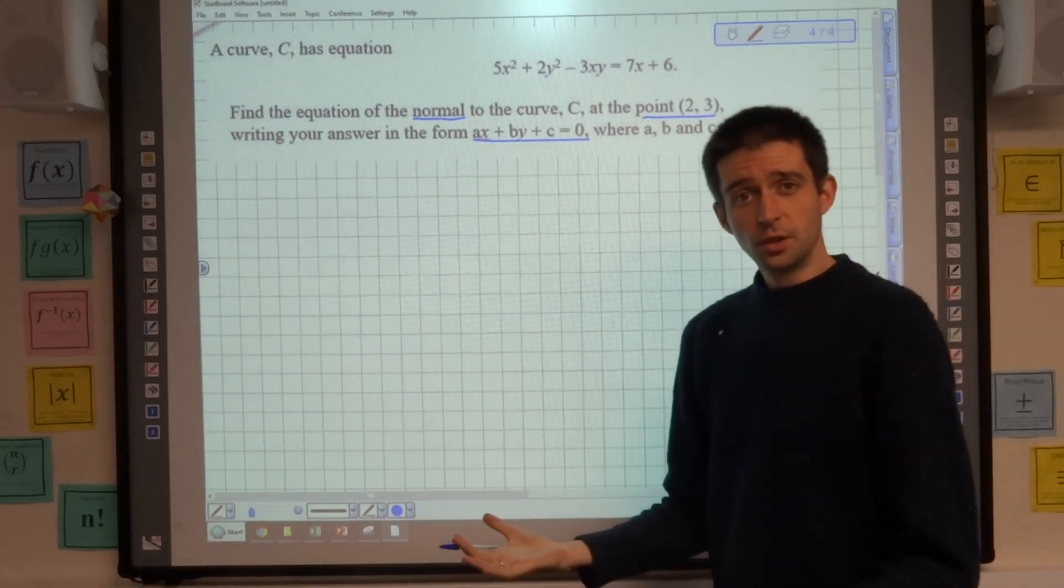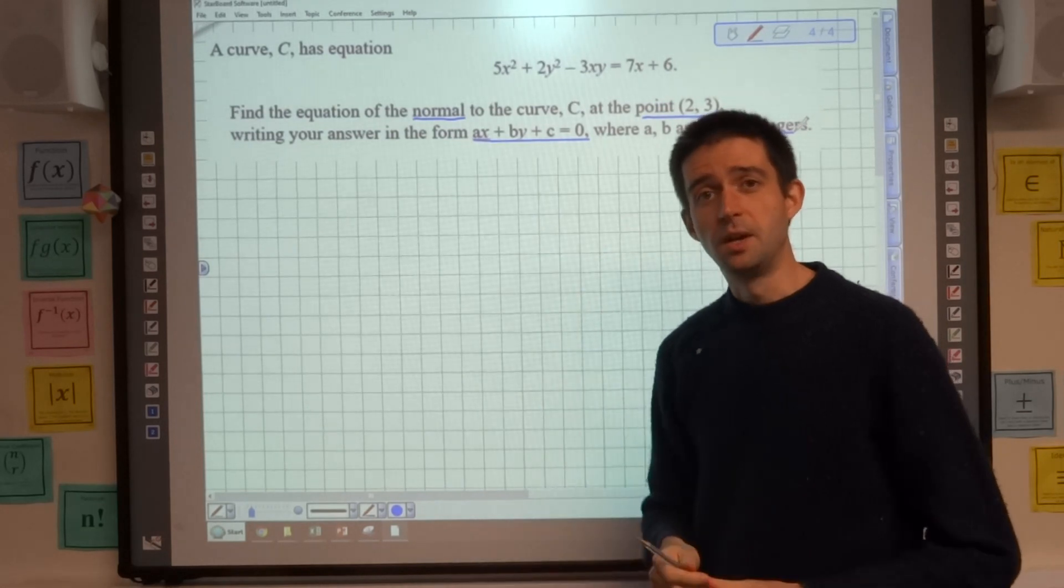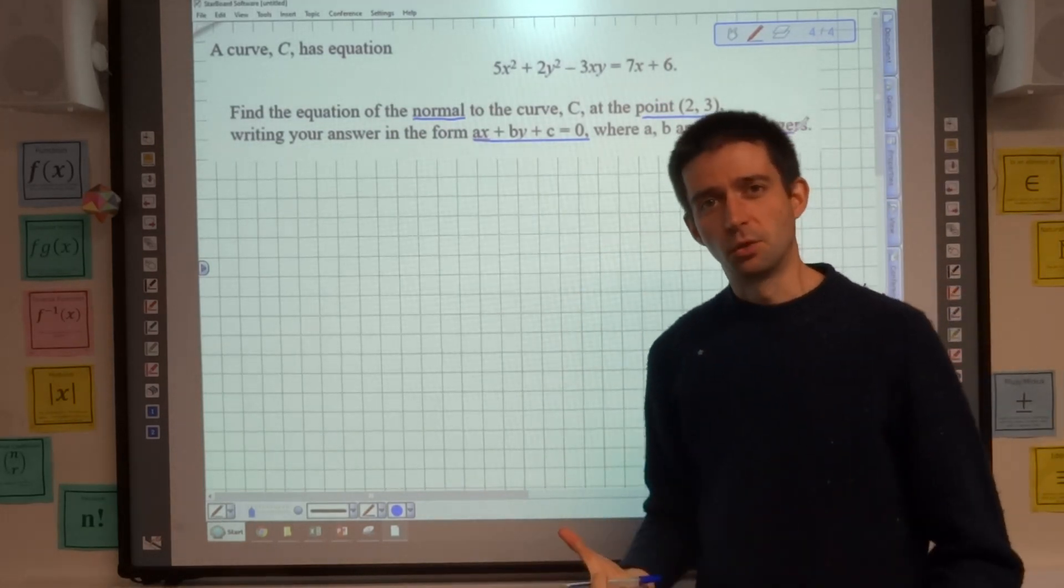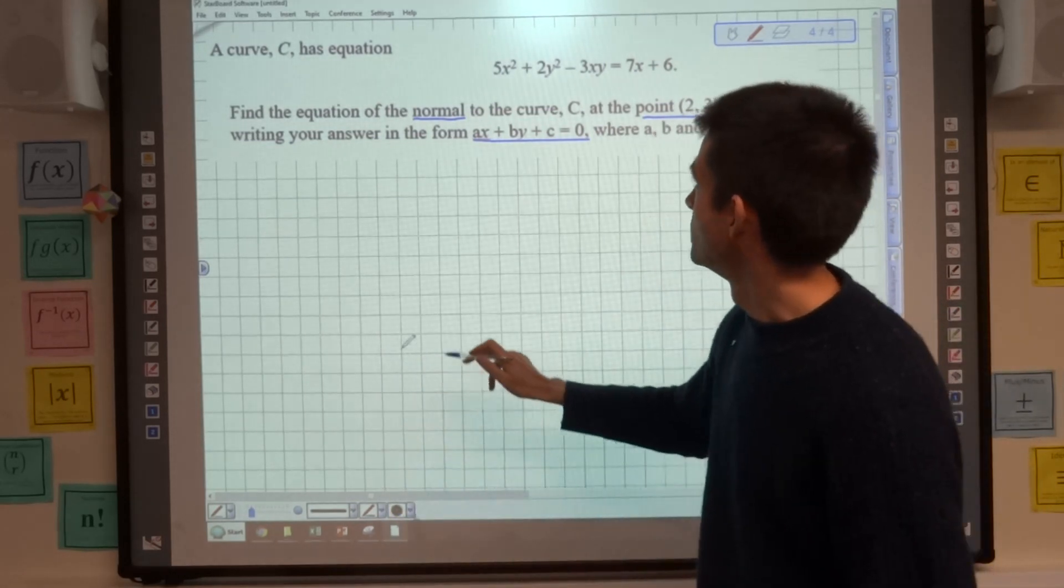To find the equation of a normal, what do we need to find the equation of a straight line? We need two things: we need a point, we have that, and we need the gradient. To find the gradient we need to differentiate the function. So let's write it out now.